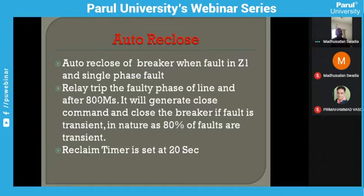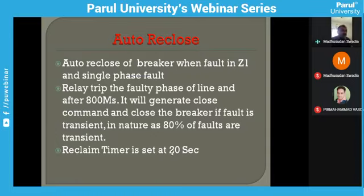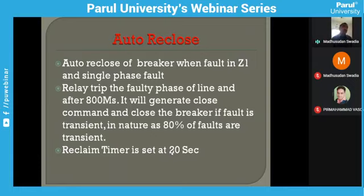The significance of the reclaim timer is as follows: suppose a line trips and recloses and the line is restored, but before 20 seconds (the reclaim time) elapses, the same tree comes near the conductor again. In that case, the autoreclose will not take another chance to reclose — because if it continuously recloses while the fault keeps coming, it would continuously try to reclose. The reclaim timer ensures the autoreclose only operates once within a set time window, protecting the system from repeated reclose attempts during persistent or recurring fault conditions.